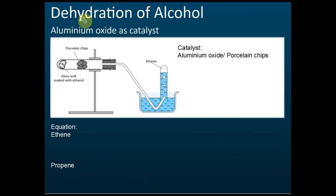Now let's look at the second method: dehydration of alcohol. This experiment shows dehydration of alcohol. There is glass wool soaked with ethanol — ethanol is an alcohol — and porcelain chips, which act as a catalyst. The catalyst is either aluminium oxide or porcelain chips.